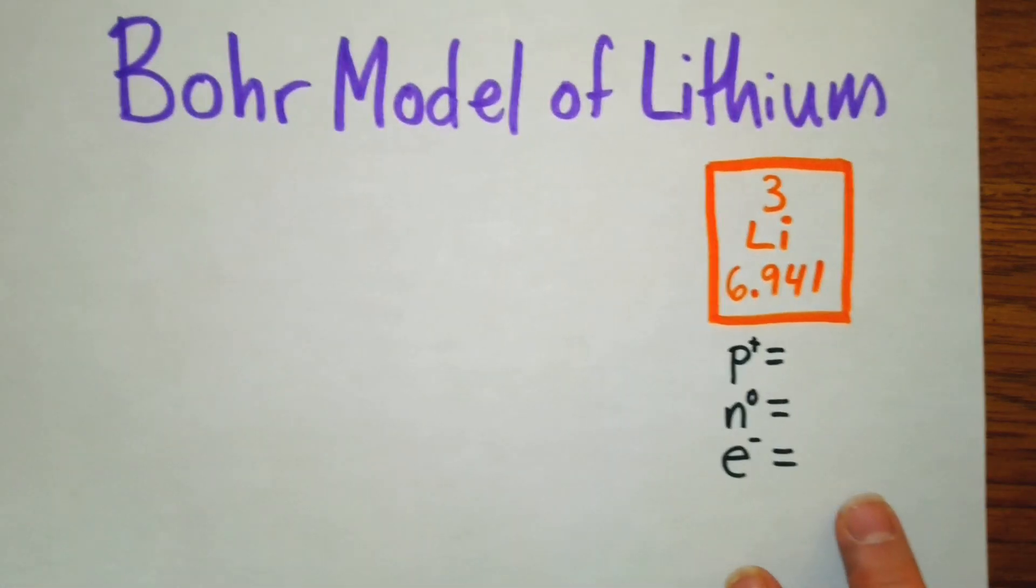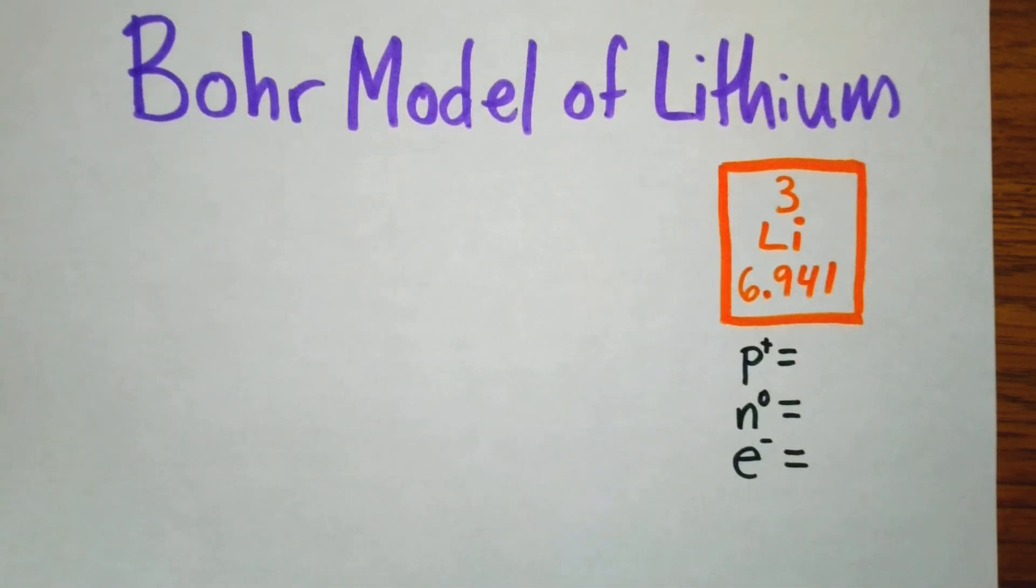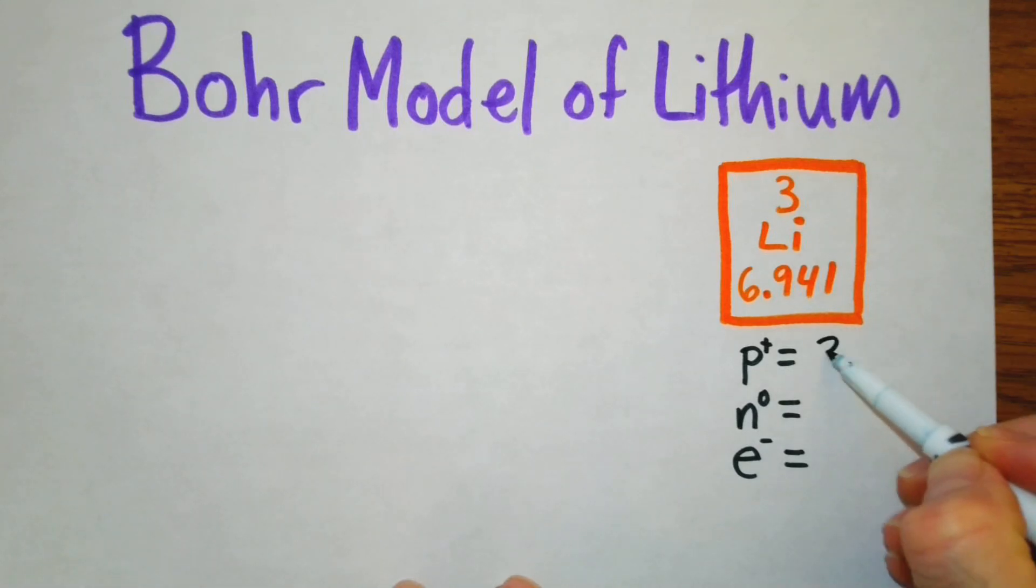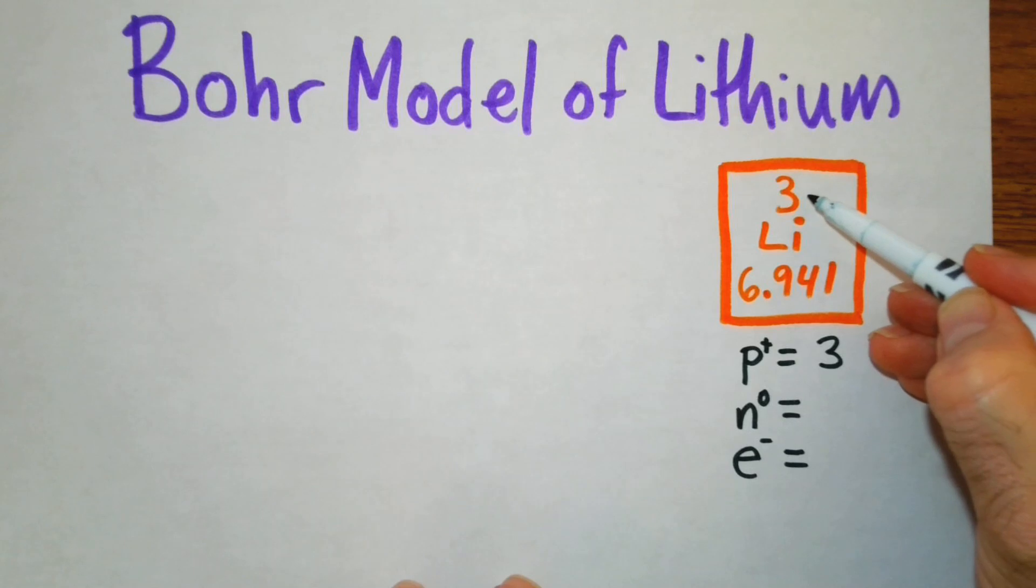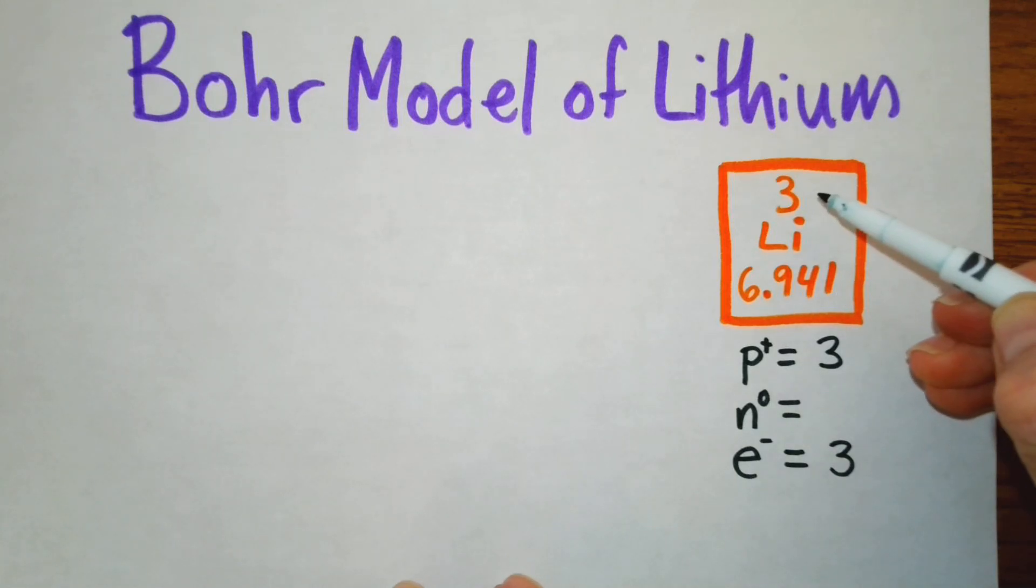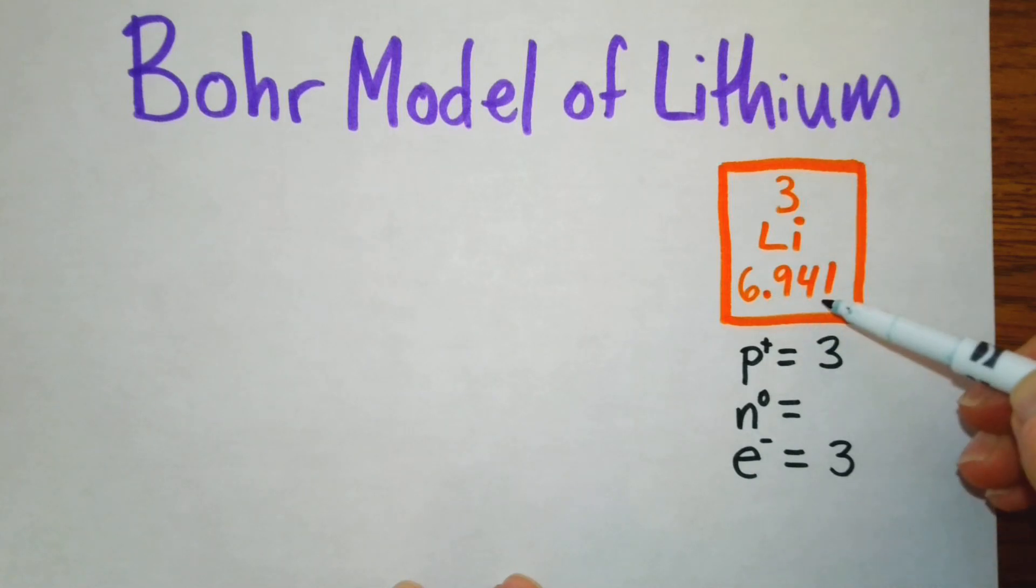For our Bohr model of lithium we're going to need a periodic table, and we have a periodic table square right here. We can see that our atomic number is three, and that atomic number tells us the number of protons. That atomic number also tells us the number of electrons. To determine the number of neutrons, we're going to round this atomic mass and then subtract the atomic number. So that rounds up to seven minus three, which gives us four.